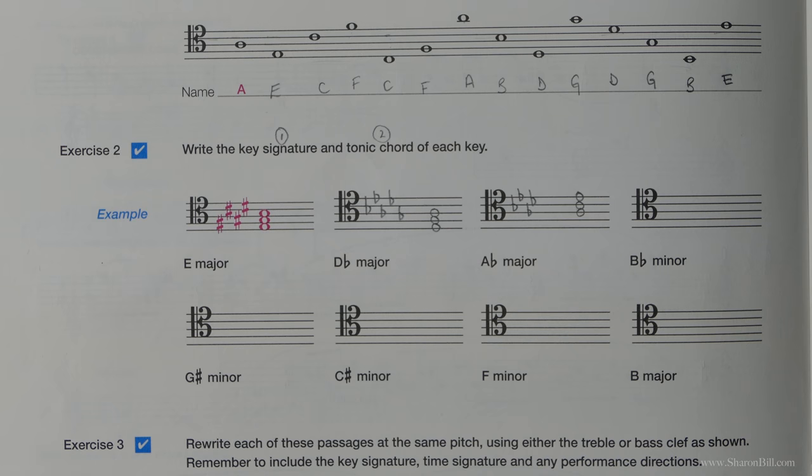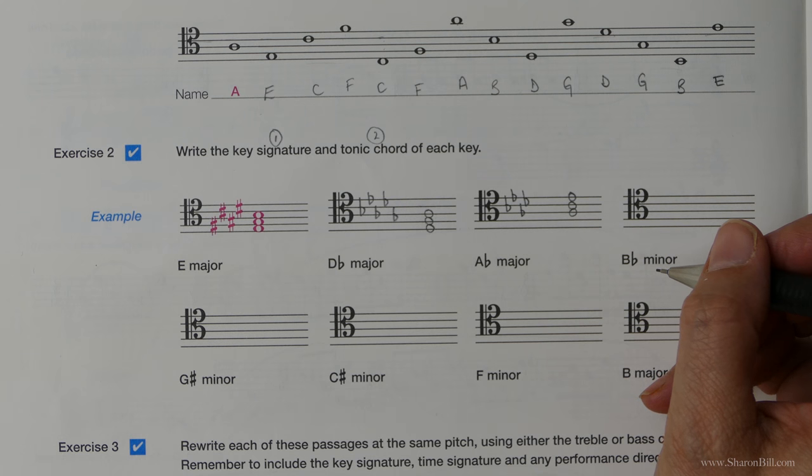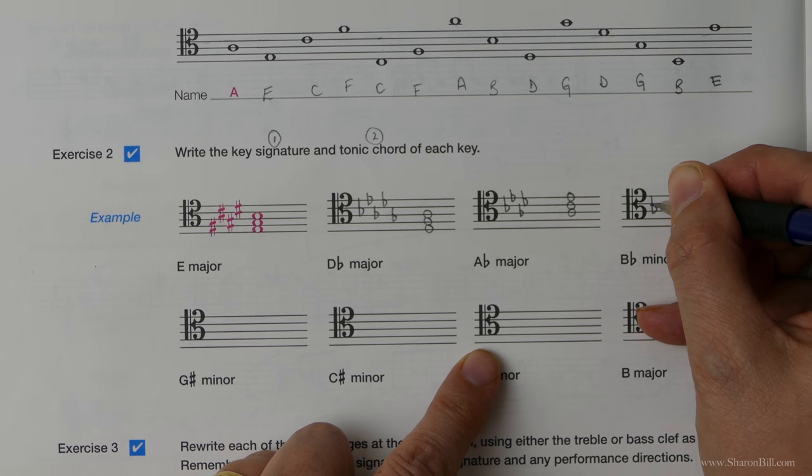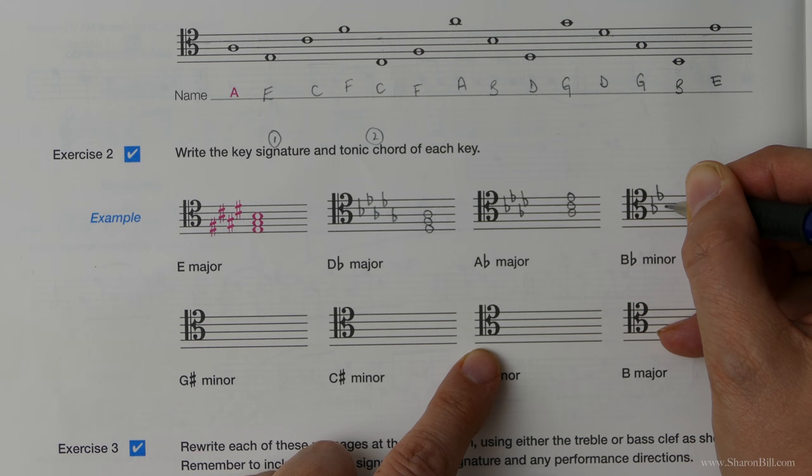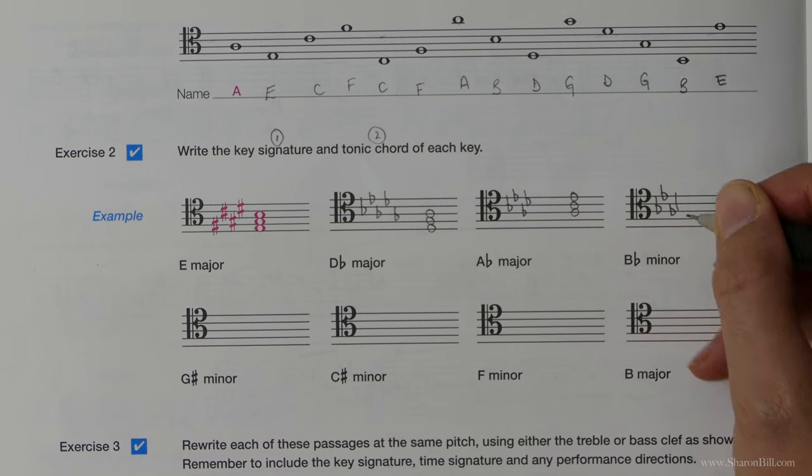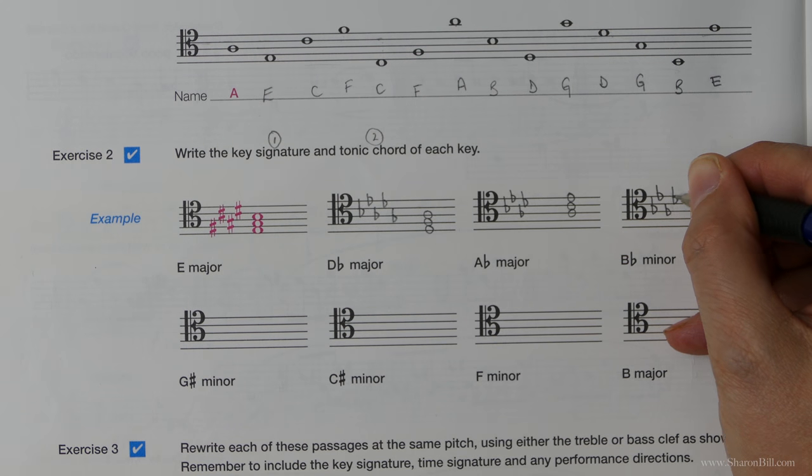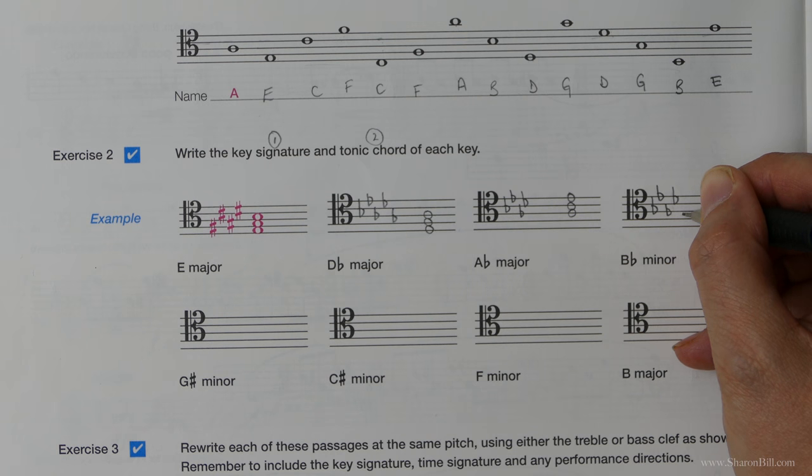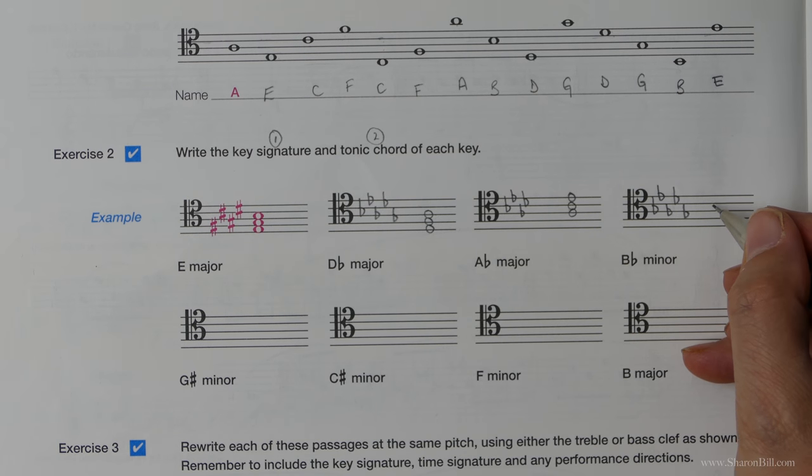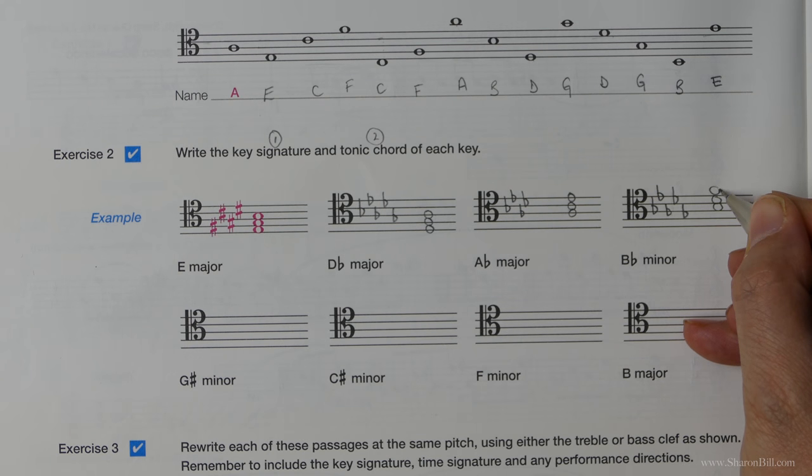So B flat minor is related to D flat major. So we need this key signature again. B flats, E flats, A flats, A flats. Oh, got a bit off there. D flats and G flats. And then we need a B. So C is there. B must be one below. First, third, fifth. Next one.